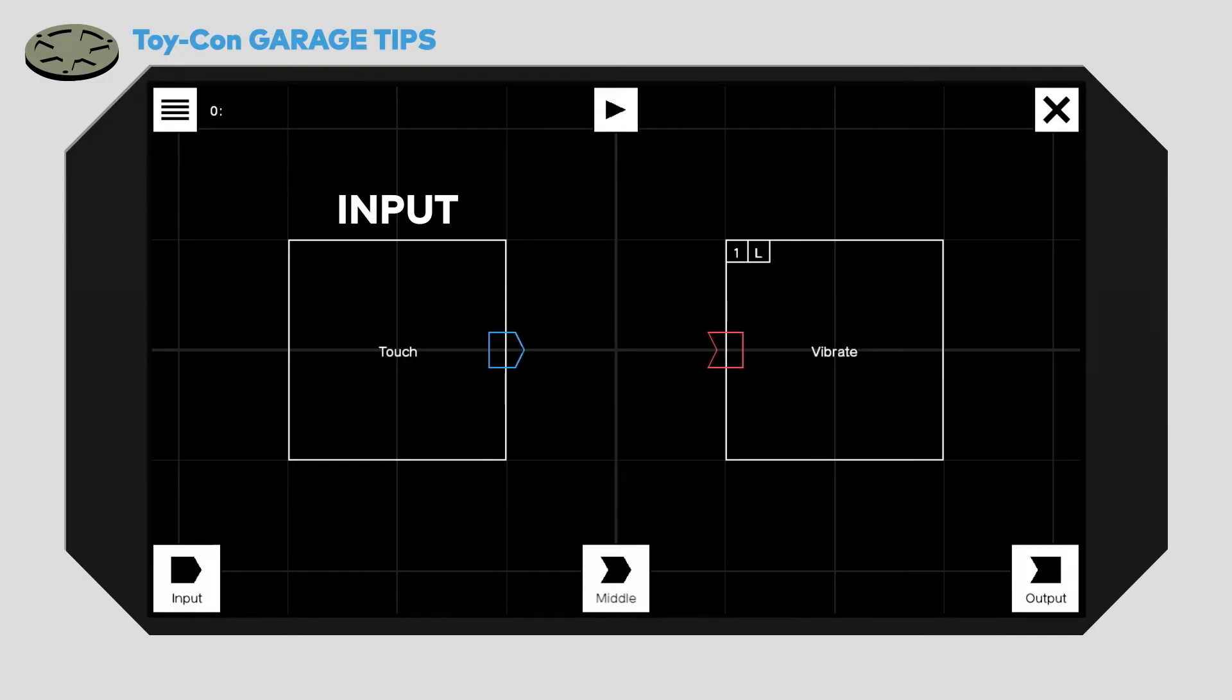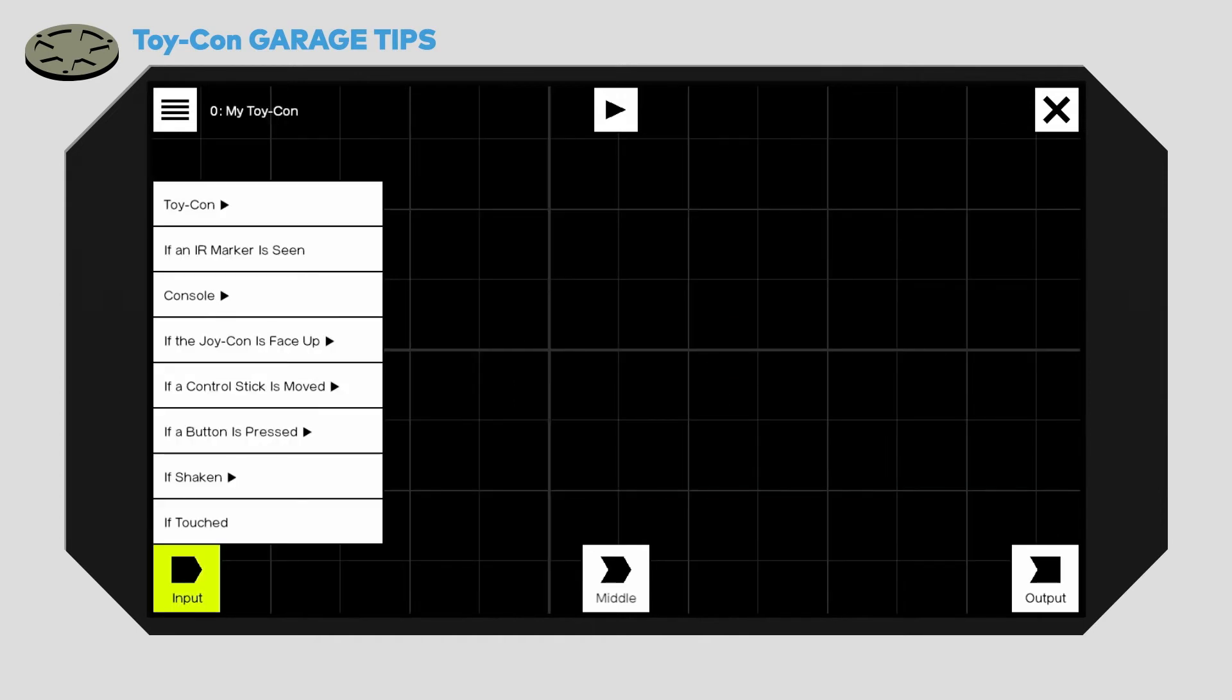The boxes labelled input and output are called nodes, which sounds way cooler, don't you think? Use input nodes to choose your form of input, such as button presses or control stick movements.